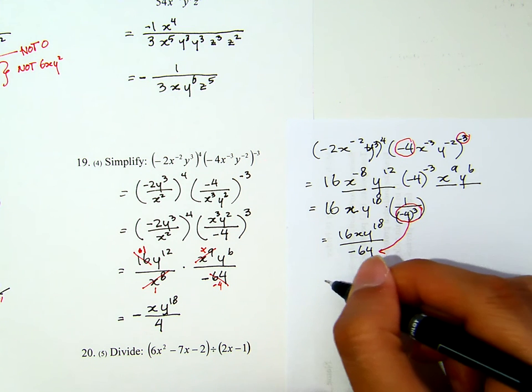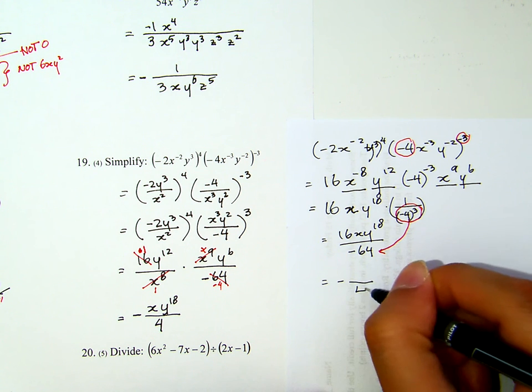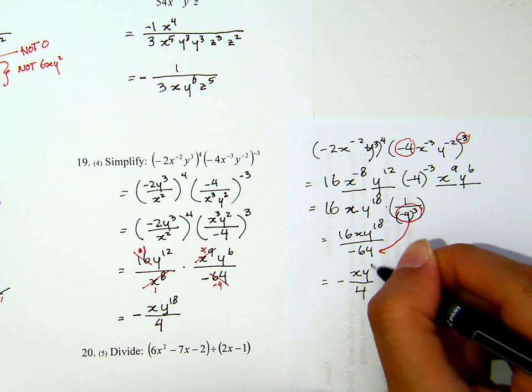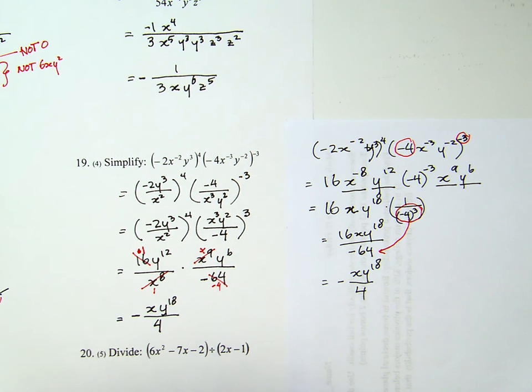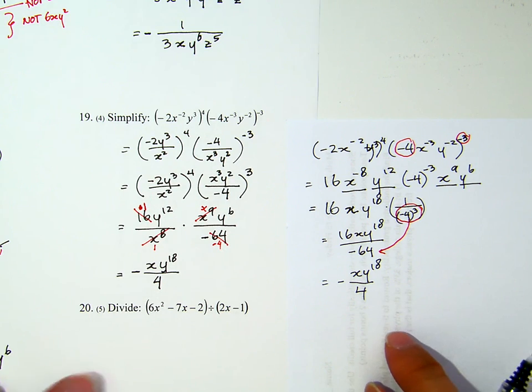And negative 4 quantity to the power of 3 now becomes negative 64. Which, if I reduce that part, that gives me negative 4 at the bottom, x, y to the 18th. Which is the same answer with what I get earlier.